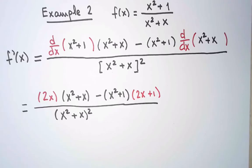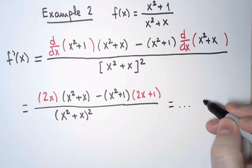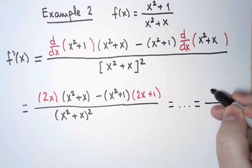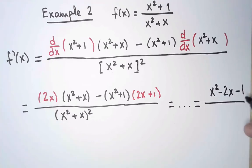We can simplify it. I will omit the intermediate steps. And the final answer is x² minus 2x minus 1 over x² plus x².